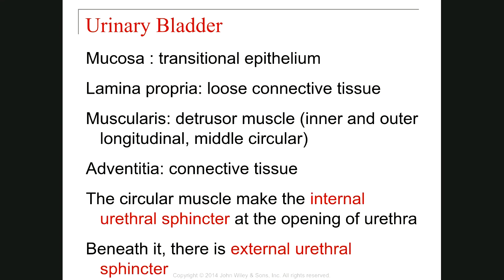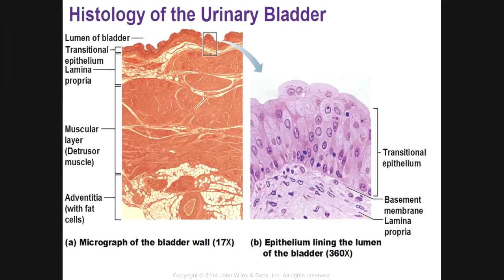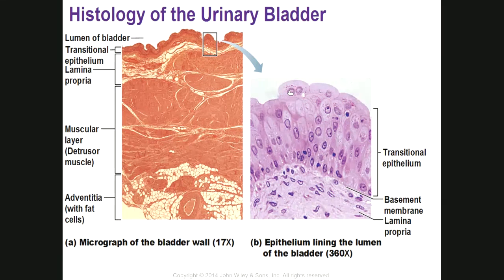Now I want to talk about the histology of the urinary bladder. First, you can see the epithelium, which is transitional. In transitional epithelium, the cells are pillow-shaped and we have more than one layer. The key for identification is checking the binucleated cells scattered between the apical layer of cells.